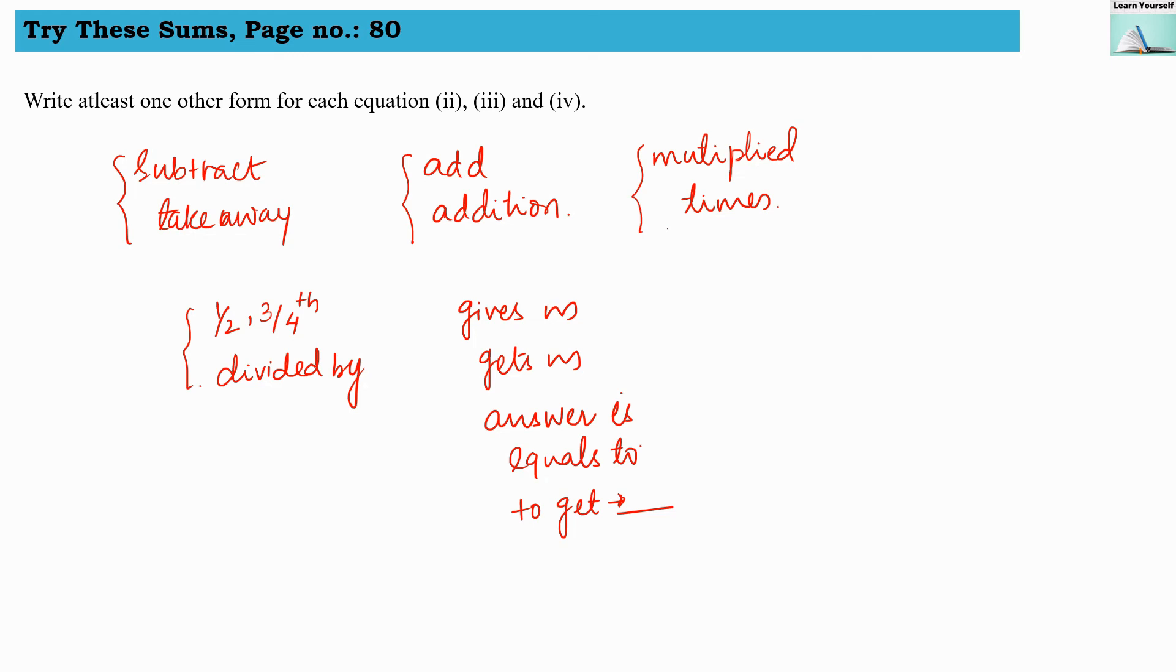Then for equals to, there are many terminology: gives us, gets us, answer is, equals to, or we are starting the statement like to get answer 5 or to get answer 20. This expression is, and then the complete expression they will give. So here in these statements, to get or to get answer, they are giving answer first and then the expression. So these are the ways and these are the terminology when we are writing a statement we are using.